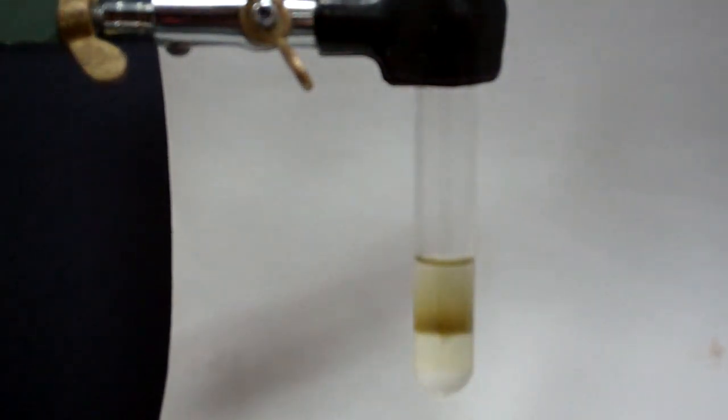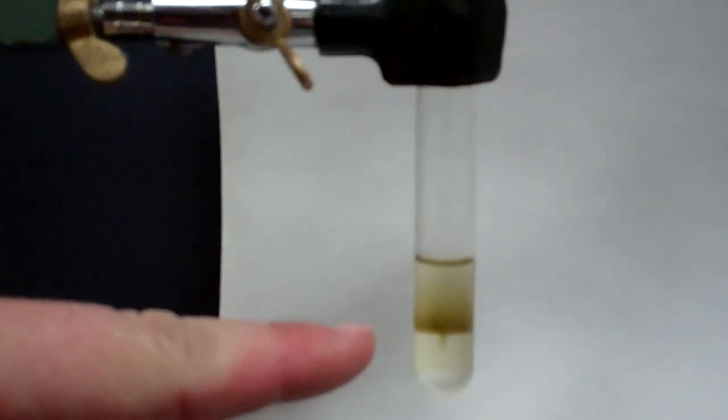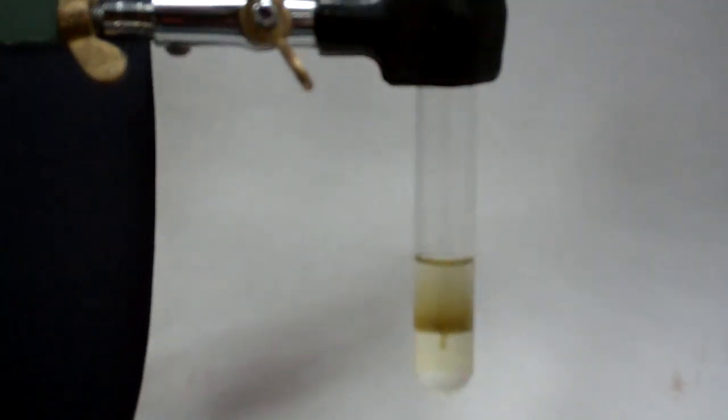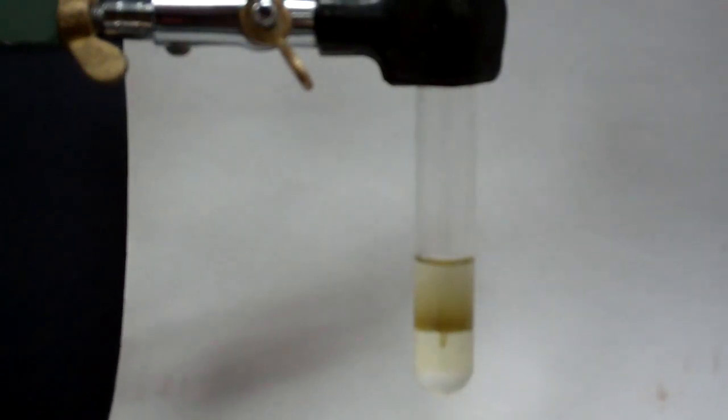If I put up my white background, here you can see that brown ring that is forming where those two solutions are meeting. And that is the sign of a positive test result for the nitrate ion.